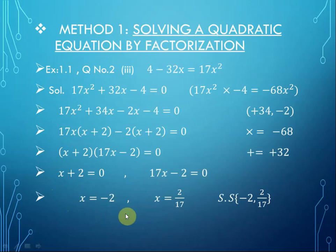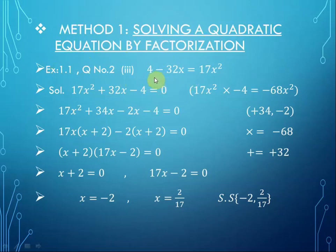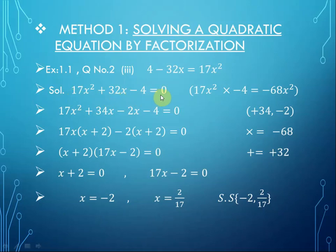Let us start the first method: solving a quadratic equation by factorization. From exercise 1.1, question number 2, part 3, we take as an example the equation 4 minus 32x equals 17x². First of all, we transform the equation into standard quadratic form: 17x² plus 32x minus 4 equals 0.